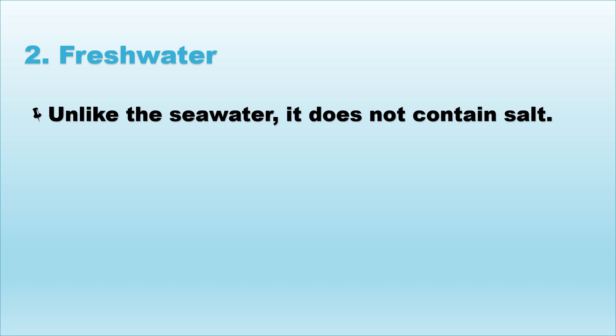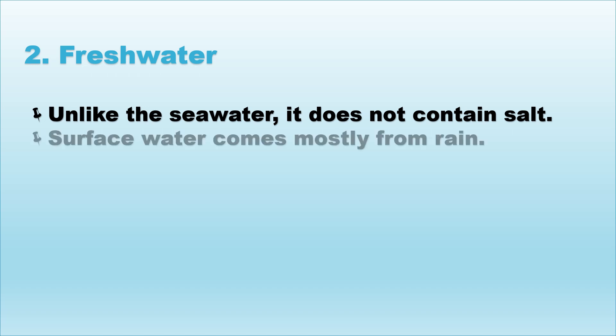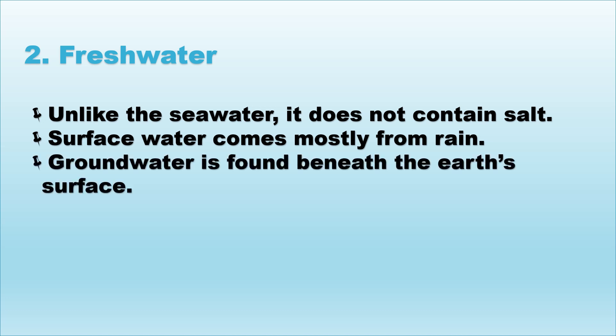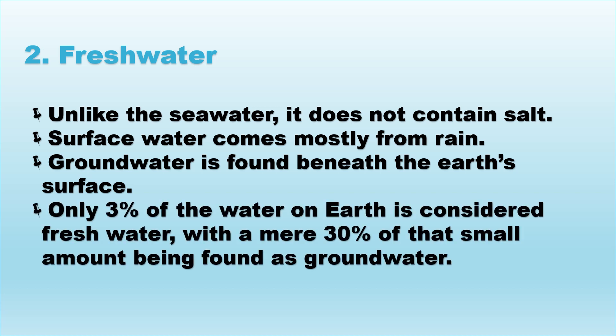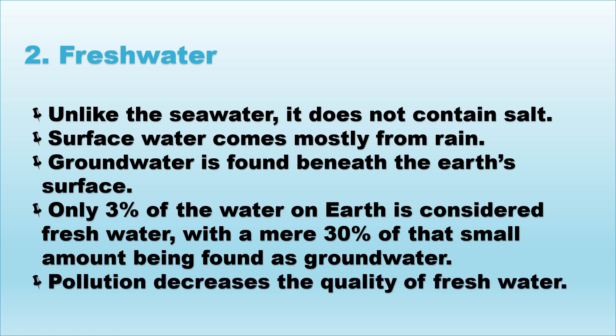Fresh water, unlike sea water or salt water, does not contain salt. Surface water comes mostly from rain. Groundwater is found beneath the Earth's surface. Only 3% of the water on Earth is considered fresh water, with a mere 30% of that small amount being found as groundwater. Pollution decreases the quality of fresh water.